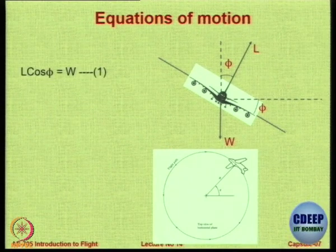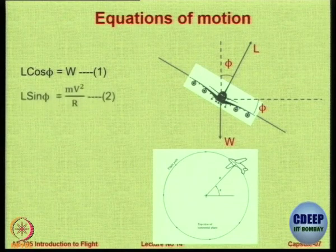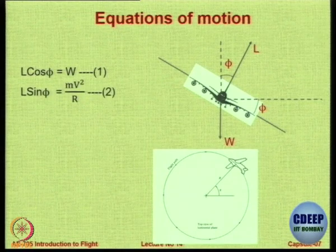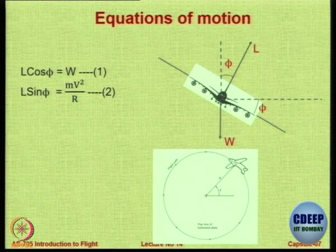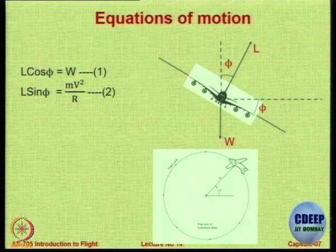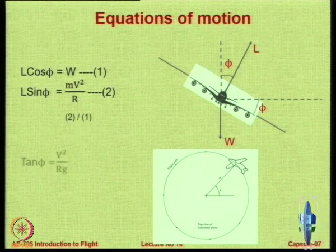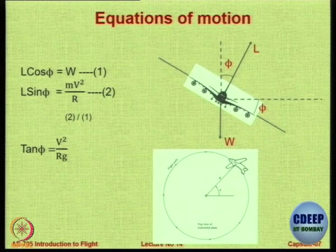L·cos φ = W, that is our first equation, and L·sin φ = mv²/r, which is the centrifugal force acting on it. Taking the ratio of these two equations gives us tan φ = v²/(gr).